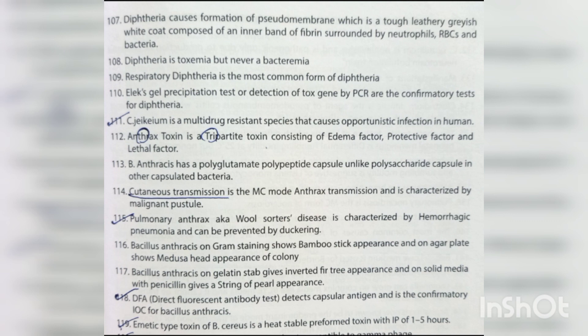Diphtheria causes formation of pseudomembrane — a tough, leathery, grayish-white coat composed of an inner band of fibrin surrounded by neutrophils, RBCs, and bacteria. Diphtheria is a toxemia but never a bacteremia. Respiratory diphtheria is the most common form. Elek gel precipitation test or detection of tox gene by PCR is the confirmatory test for diphtheria. C. jeikeium is a multi-drug resistant species causing opportunistic infections.